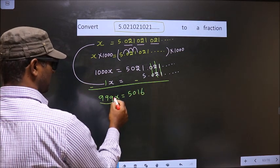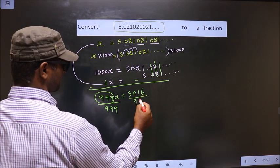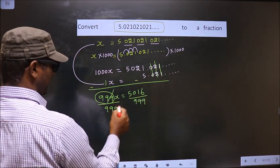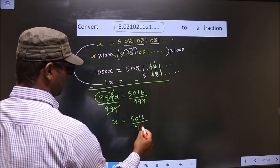Now you should remove 999, so you divide. This cancels out, you get x equal to 5016 by 999.